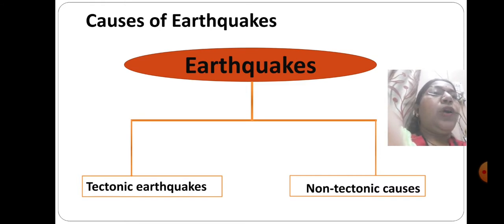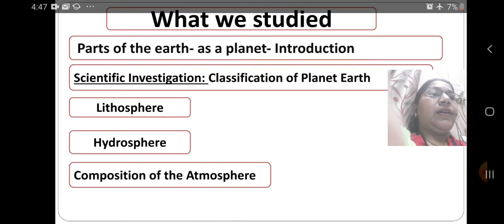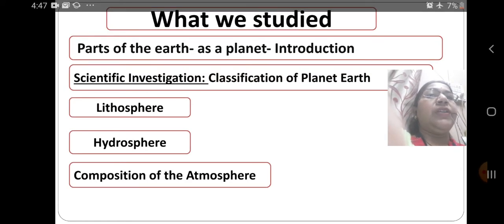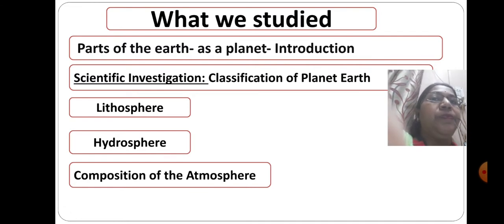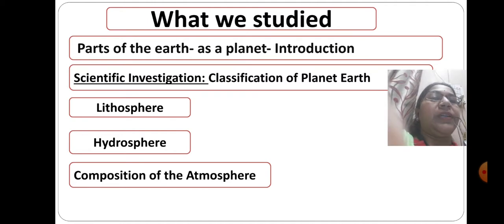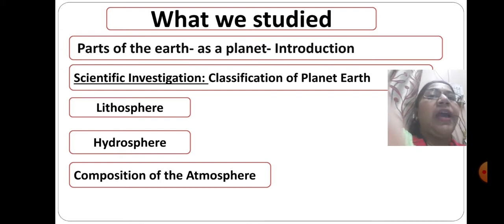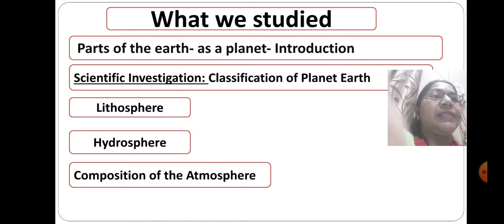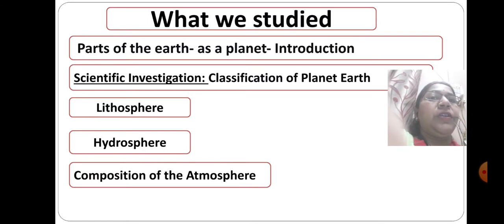Before this, let us see what we studied in the previous lecture. We studied the parts of the Earth as a planet — that is the introductory part — as well as scientific investigation, ideas about the lithosphere, hydrosphere, and the composition of the atmosphere, including what amount of gases and moisture are present in the mixture.